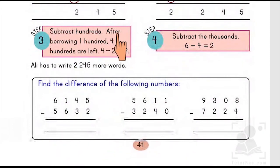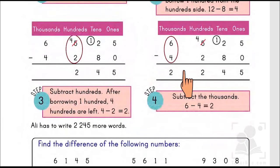Then step 3 says subtract hundreds. After borrowing 1, 4 hundreds are left, so it means 4 minus 2 equals 2. 6 minus 4 equals 2. So the difference between these two digits is 2,245.